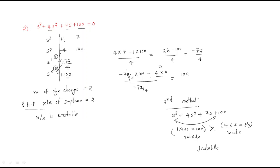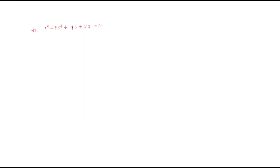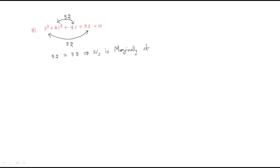For the next problem, we have four terms. The outside product is 1×32 = 32 and the inside product is also 32. When the outside product equals the inside product, the system is marginally stable.